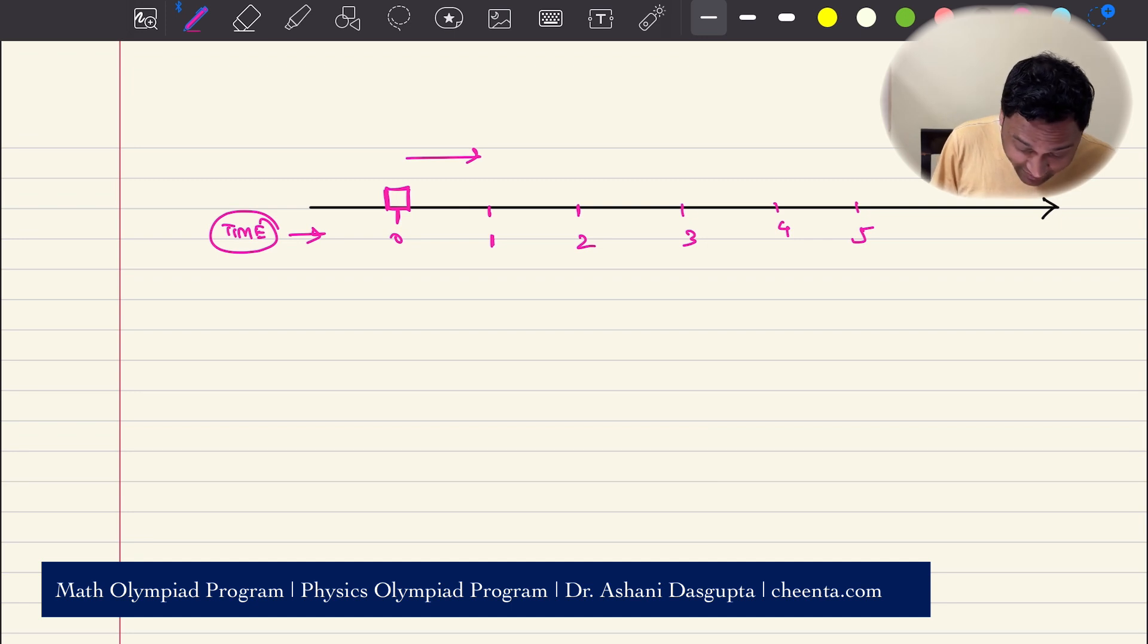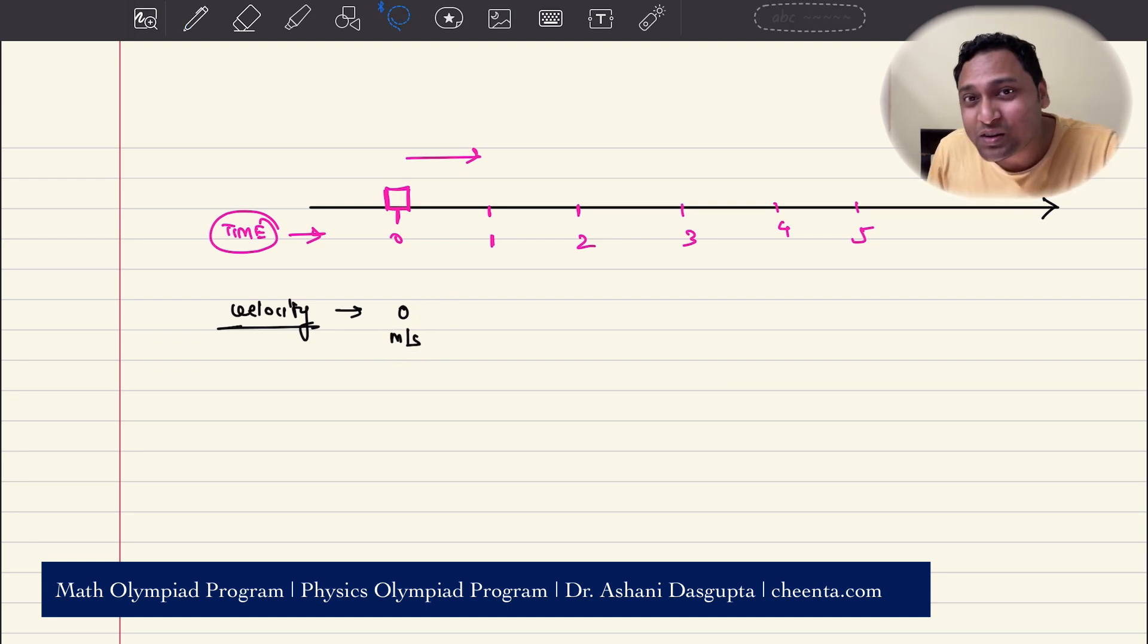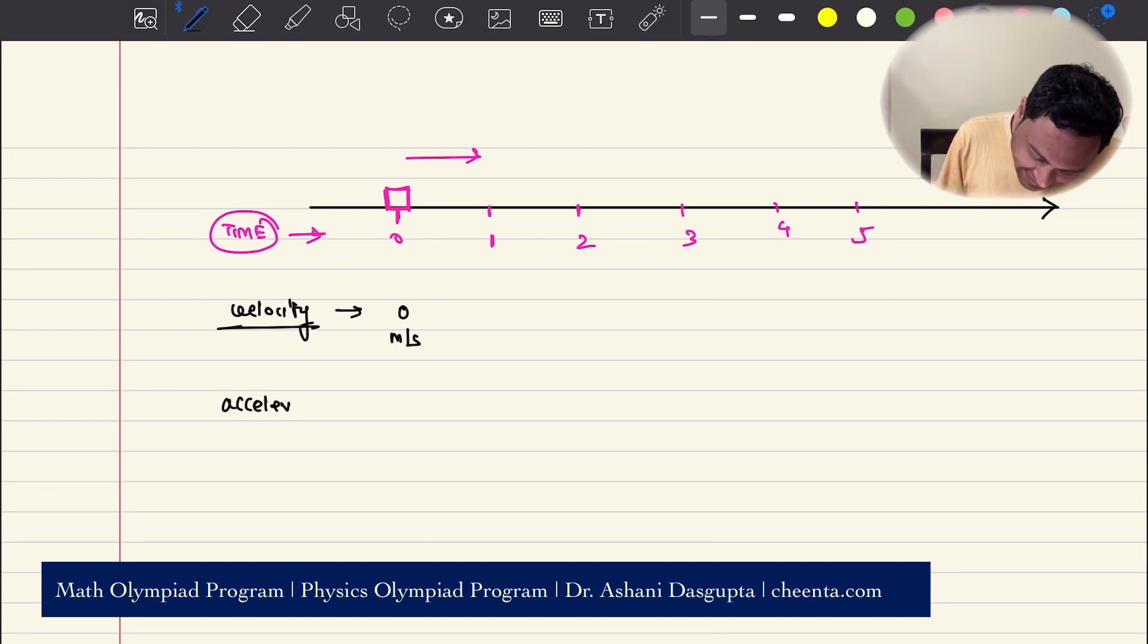It's also given that the velocity of the body, the initial velocity, is 0 meter per second.